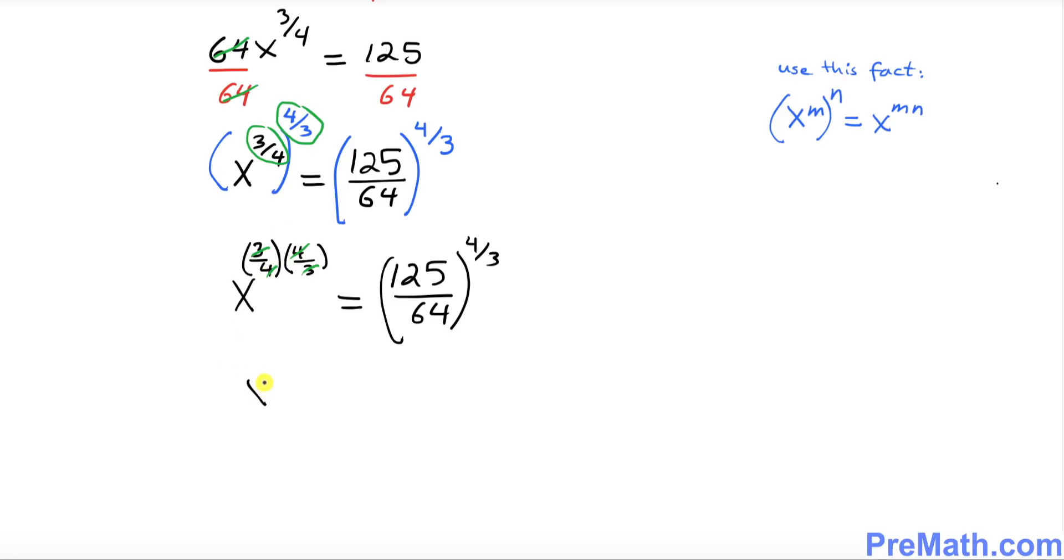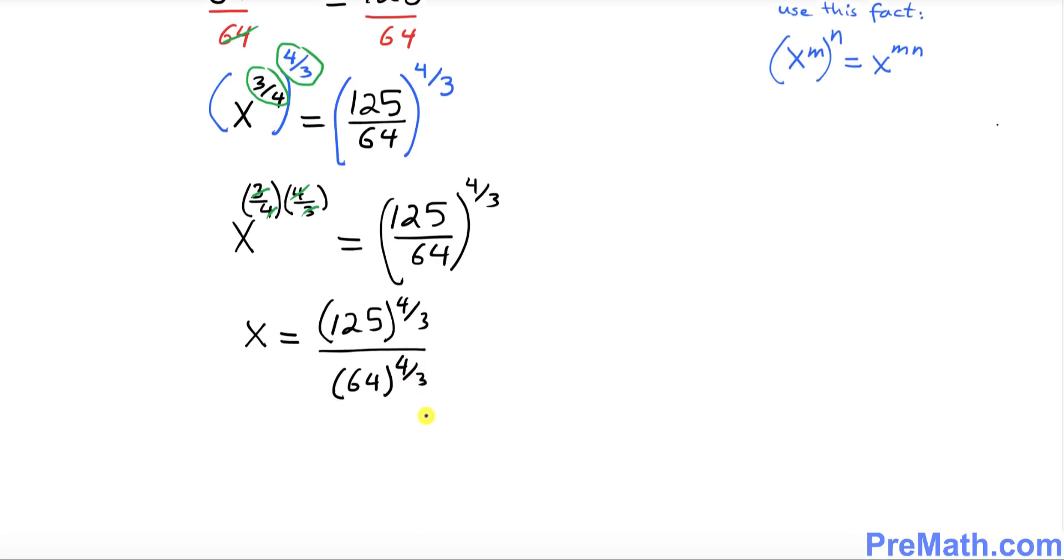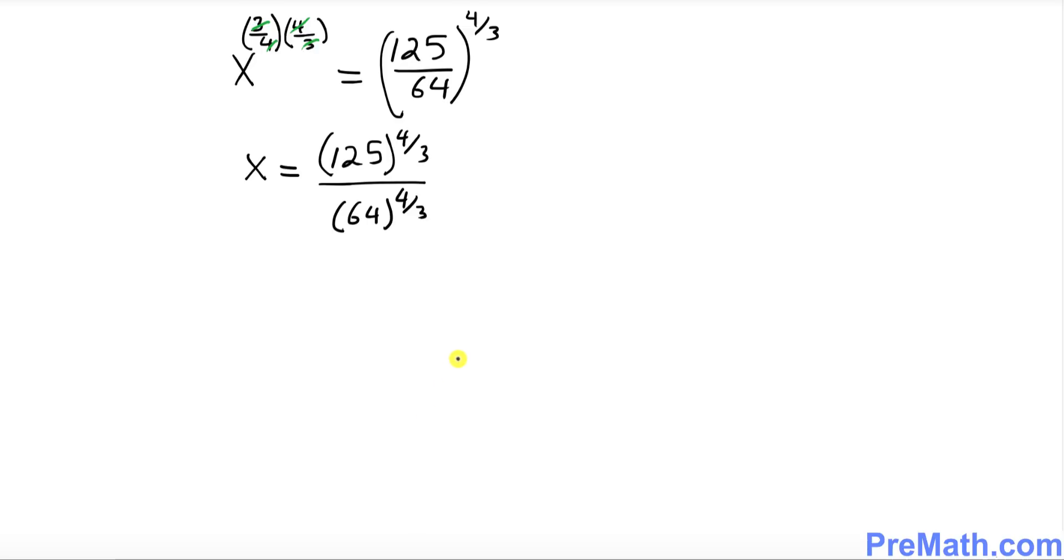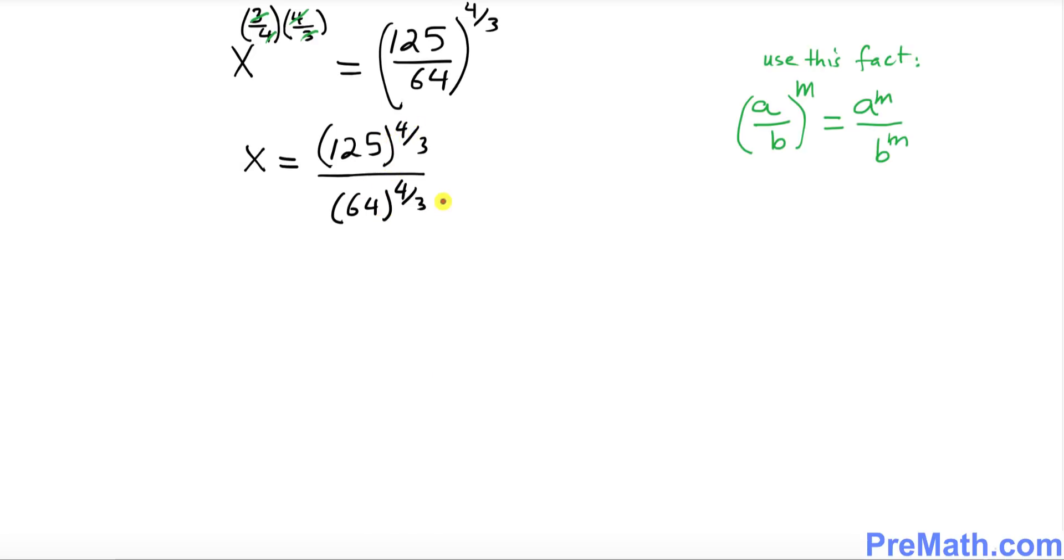So we simply got an x on the left hand side. And here we can split it up. These two fractions I can write 125 power 4 over 3 divided by 64 power 4 over 3. And by the way, splitting this thing up we use this fact: if you have a fraction a over b power m, then you can write a power m divided by b power m.